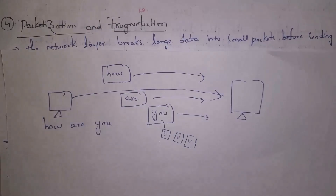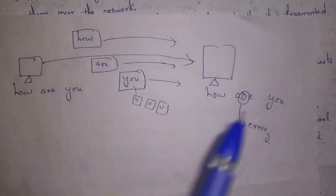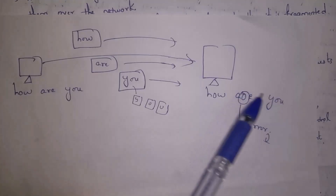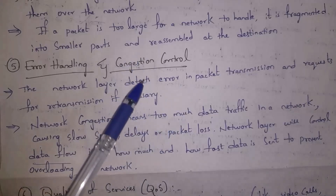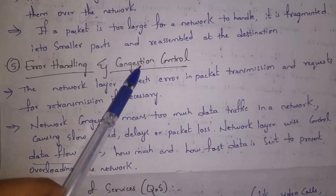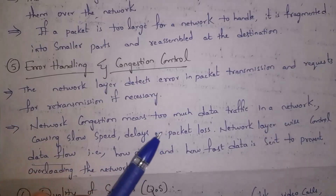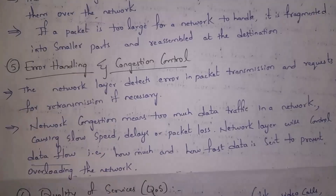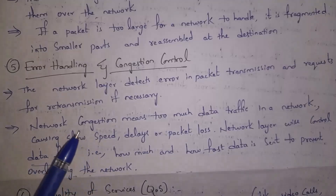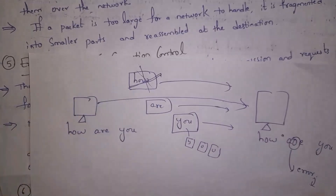The fifth function is error handling and congestion control. If there are any errors in packets, the network layer will identify and correct the error — this is error handling. Congestion means too much traffic in the network. For example, if many vehicles are passing on a single road there will be a traffic jam; similarly, if multiple devices transfer data at the same time there will be a traffic jam in the network. If there is too much traffic, data will be transferred very slowly and some packets may be lost.